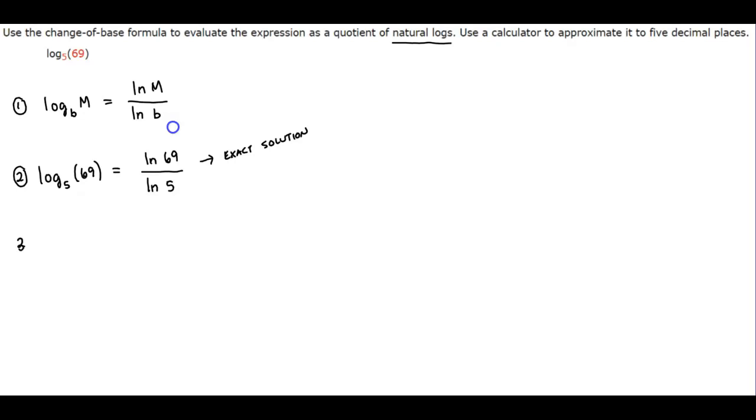Now what they want us to do is they want us to approximate. So we're going to use our calculator, the natural log of 69 divided by the natural log of 5. And then we're going to approximate. So let's go ahead and do that.